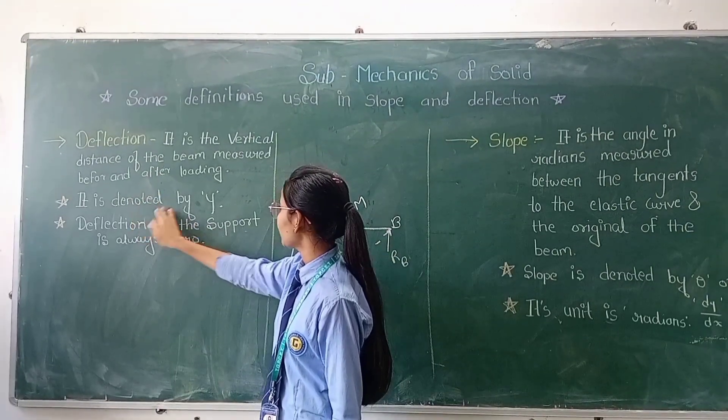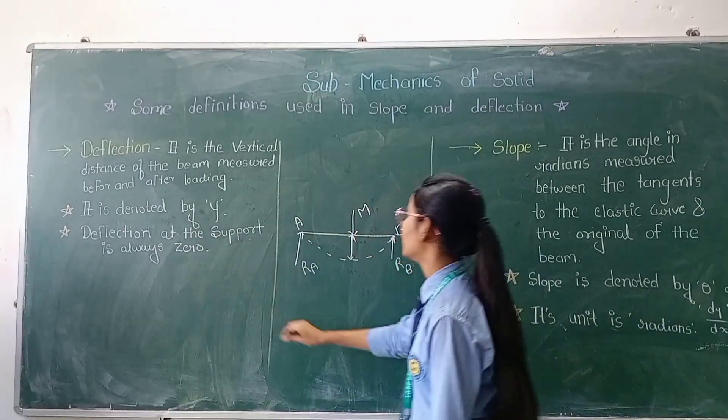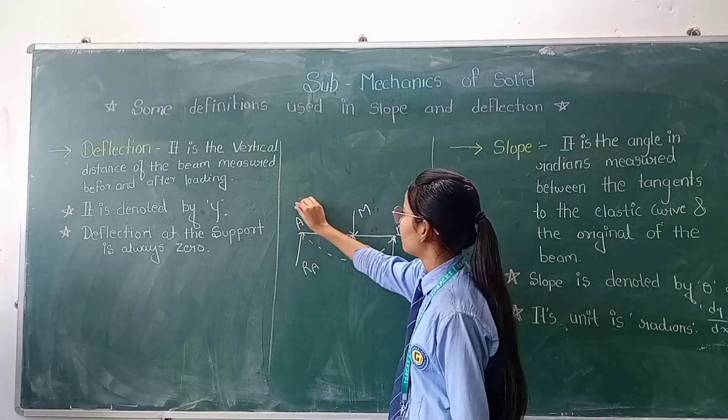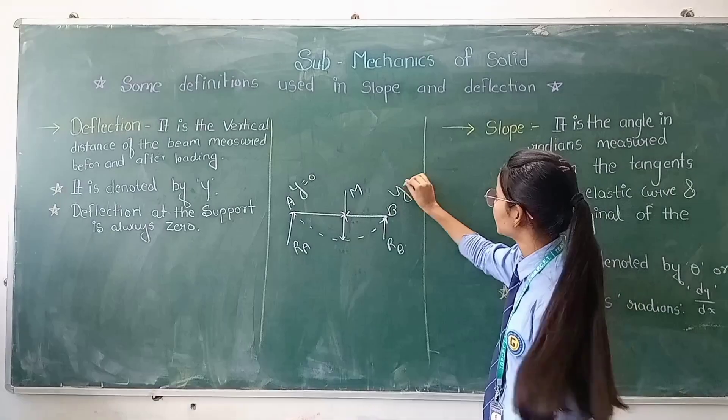The deflection is denoted by Y, and the deflection at the support is always zero. Then at point A, Y is equal to zero, and at point B, Y is equal to zero.